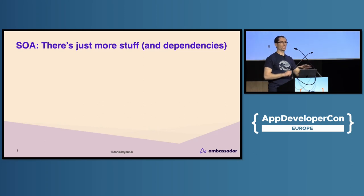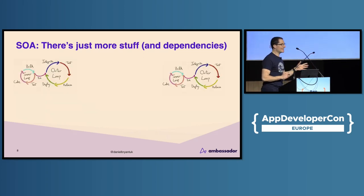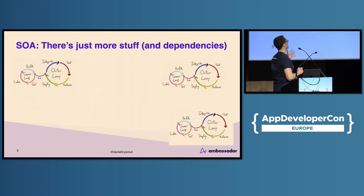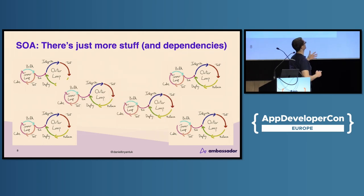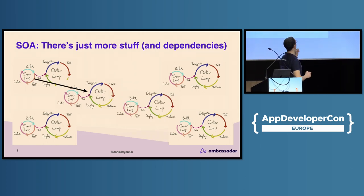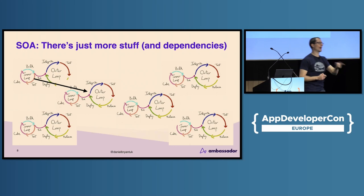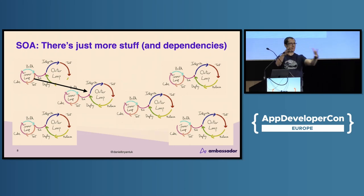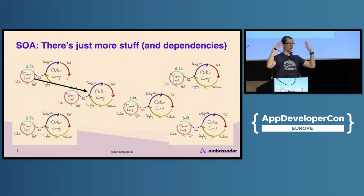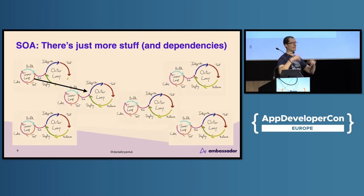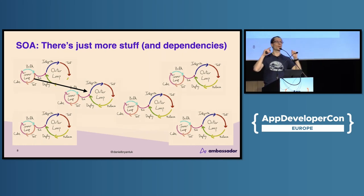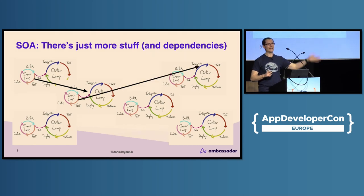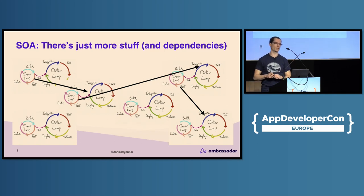One thing with service-oriented architectures and microservices in general is there's just more stuff. My inner loop can depend on your outer loop. You've given me a new dependency, a new service — I have no idea how it works. I look at the Swagger docs, the OpenAPI docs, async API — I get an idea — but I want to poke and prod that service. It cascades through as well. There's just more things with service-oriented architecture.